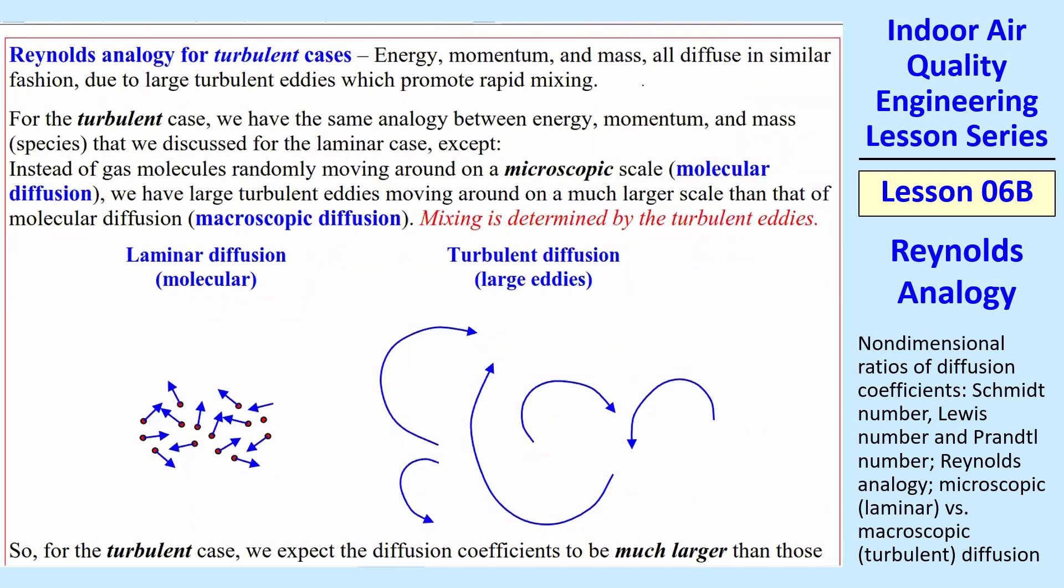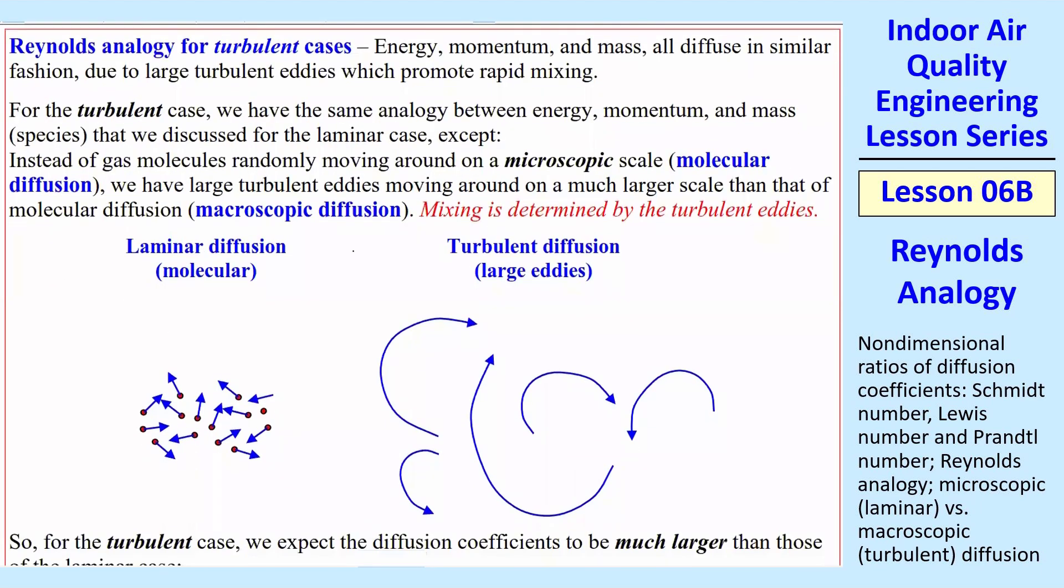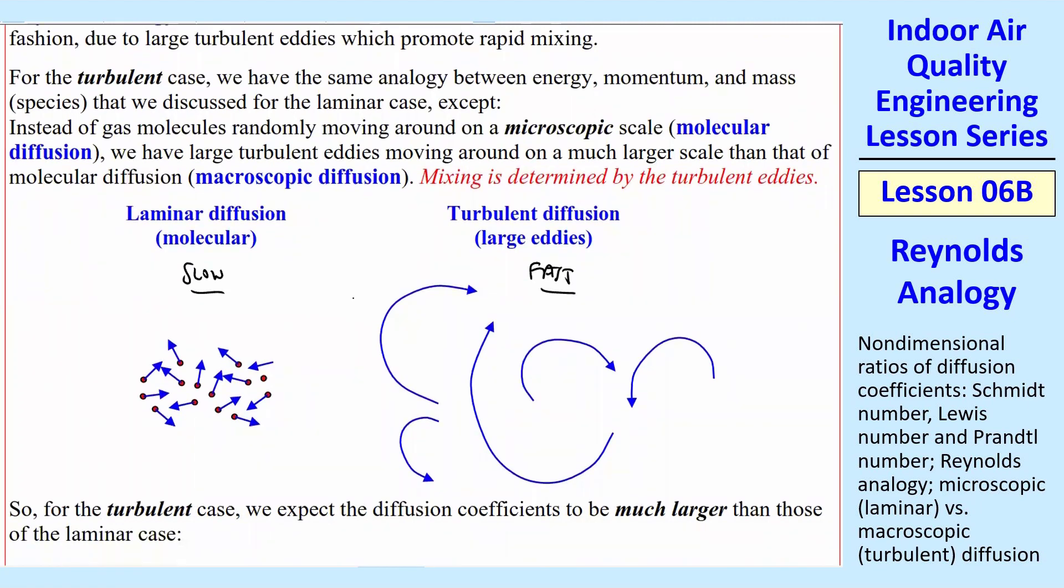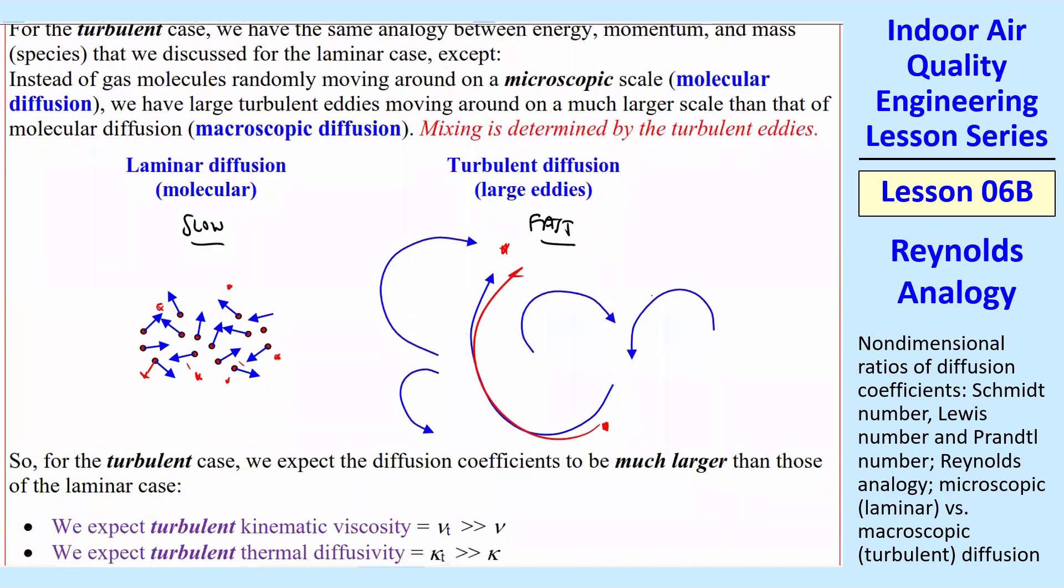Now let's look at the Reynolds analogy for the turbulent case. So again, energy, mass, momentum all diffuse in a similar fashion. But now it's due to these large turbulent eddies, which promote rapid mixing rather than the diffusion coefficients. So just as a quick review, laminar diffusion or molecular diffusion is very slow, whereas turbulent diffusion with these large eddies is much faster. In a turbulent case, if you have some particle here, it could be swept up to this part, and this one can be swept down to this part, and so the diffusion is much, much faster.